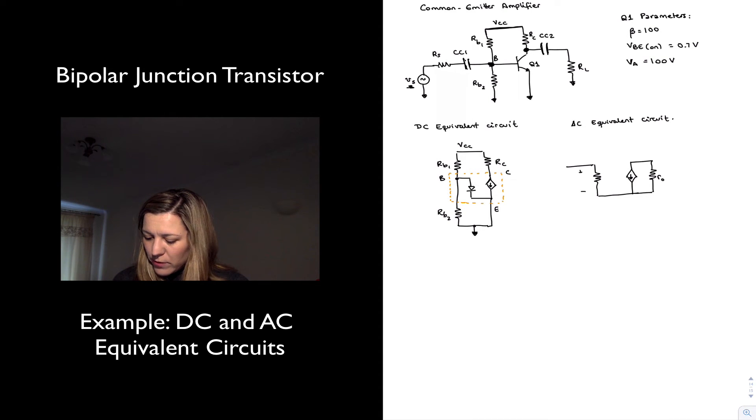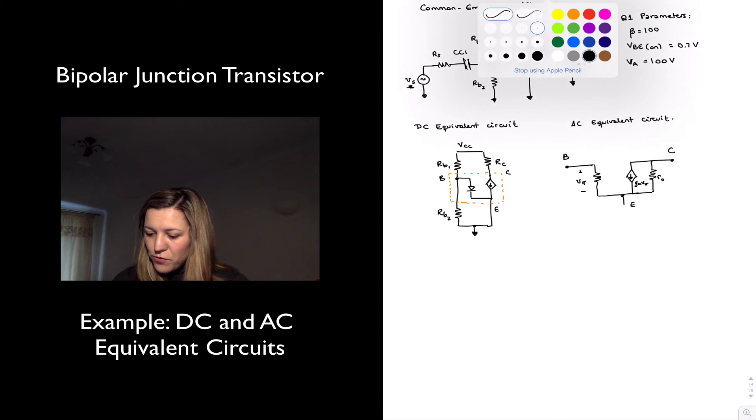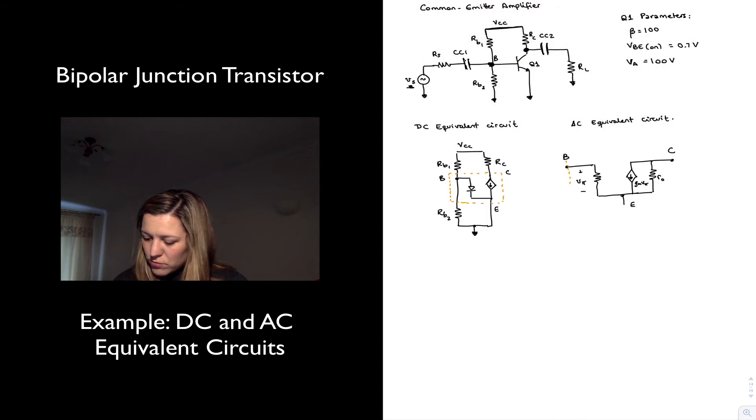Okay, so we have here our Vpi. This is gm times Vpi. And so I have my emitter, base, and collector. So I've done my transistor model so far, and now I'm going to do the AC equivalent for the rest of the circuit.